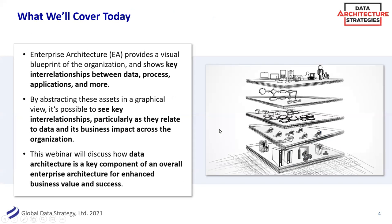Today we'll be covering enterprise architecture and its relationship to data architecture. This is a data architecture series so there will definitely be a bit of a bias on data architecture. But the beauty of enterprise architecture is that it takes a more holistic view of the organization — how data relates to process, business capabilities, and most importantly, business value. Most organizations are trying to be data driven, and enterprise architecture is a really great way to support that.